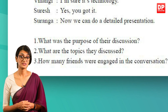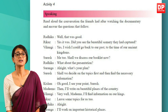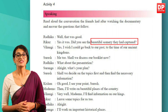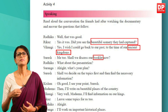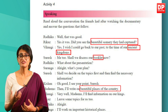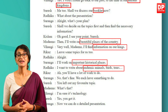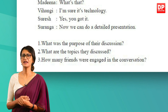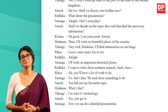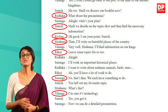Let's now look at the second question: what are the topics they discussed? From the text we can pick out some of the topics — the beautiful scenery that was captured, the ancient kingdoms, a booklet, the beautiful places in the country, information on the kings, important historical places, and endemic animals, birds, and trees. Finally, we are asked how many friends were engaged in the conversation. That is easy — Radhika, Rikaz, Vihangi, Suresh, Suranga, Kishan, and Madina — so that makes seven.